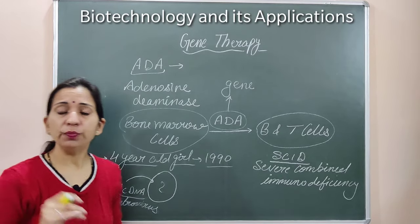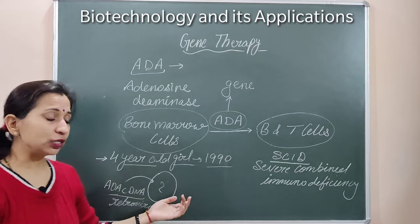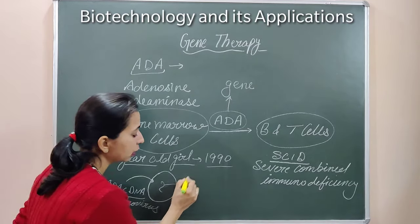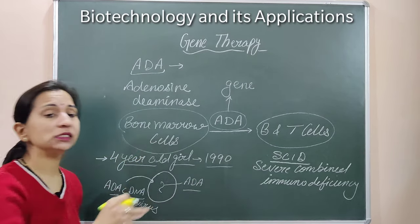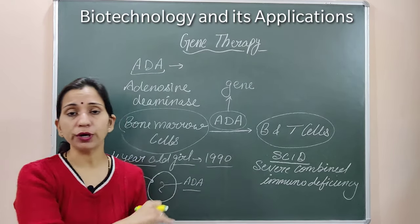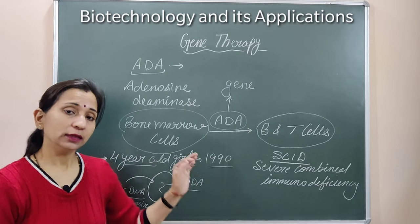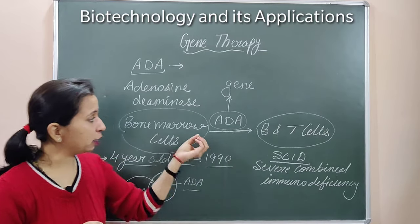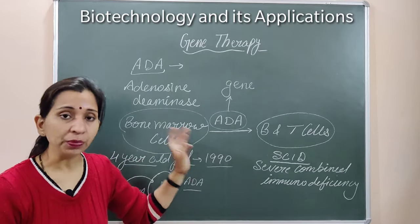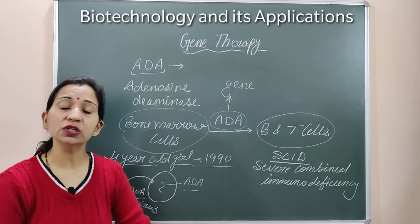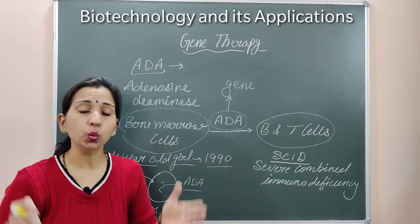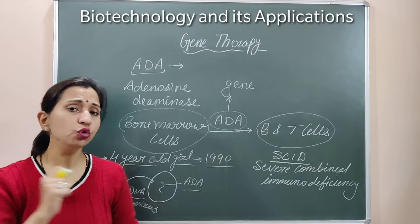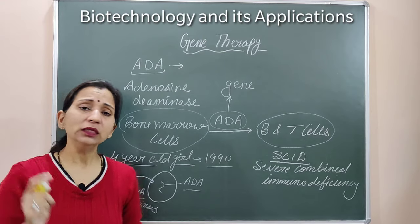The lymphocytes with the introduced ADA gene became transformed lymphocytes. These transformed lymphocytes, which now have the ADA gene present inside, were again infused back inside the girl's body. Due to the presence of this working ADA gene, adenosine deaminase enzyme will now form, and the immune system — B and T cells — will start producing. The immune system will start working.